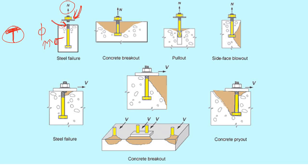The second type of tensile failure: if you have provided sufficient diameter and strength, the tensile force will be carried properly through the anchor bolt. But if it is not bonded with the concrete properly, or the bond strength is not sufficient, it will come out from the concrete — this is known as pull-out failure. The solution is to inject some bonding agent externally to increase the bond strength.